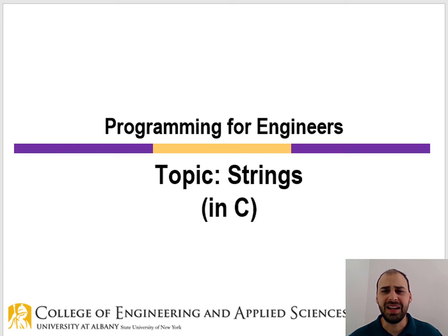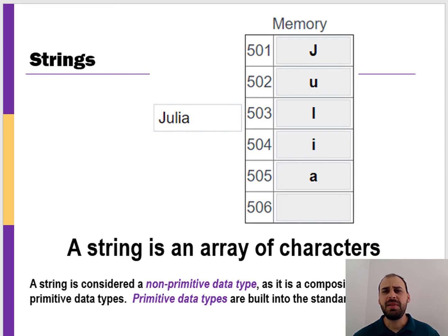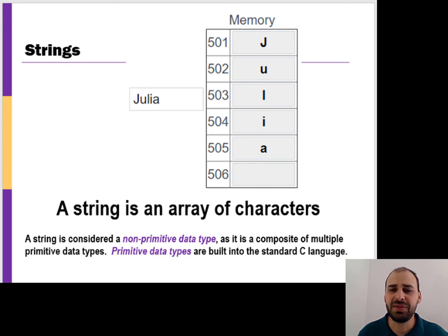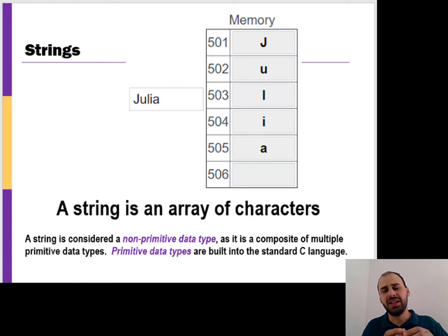Welcome back. In this video, we're going to introduce a new data type. We're going to talk about strings. Strings can be built using characters, with characters being a primitive data type and strings being a non-primitive data type, also referred to as composite or aggregate data types, because we can build strings using different data types — hence an array of characters.